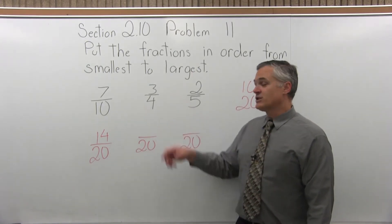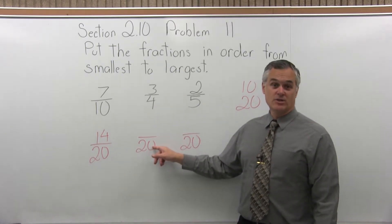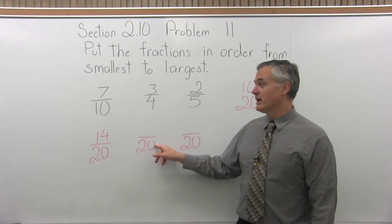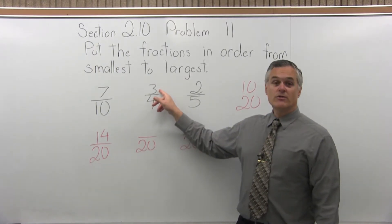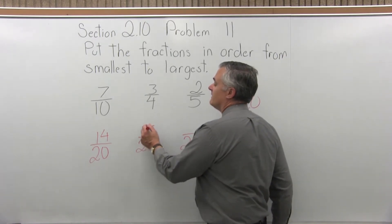Now, the next fraction, 3 fourths, the denominator of 4 must have been multiplied times 5 to turn it into a 20. 4 times 5 is 20. So the numerator of 3 would also be multiplied times 5. 3 times 5 is 15.